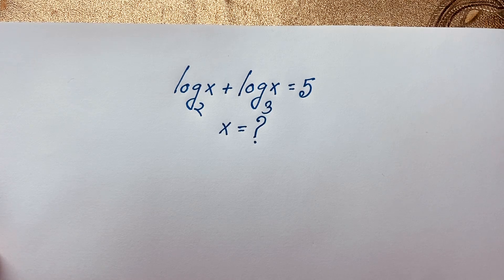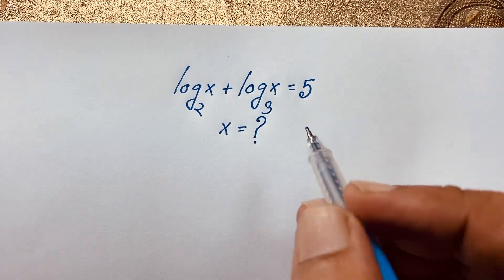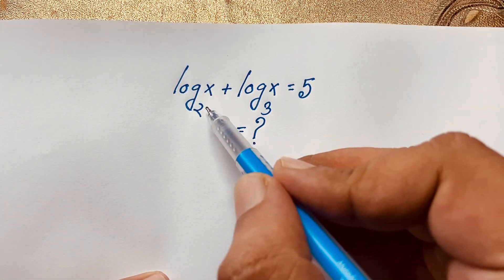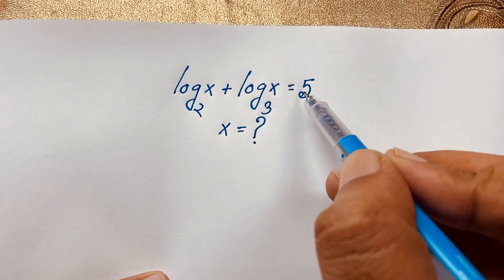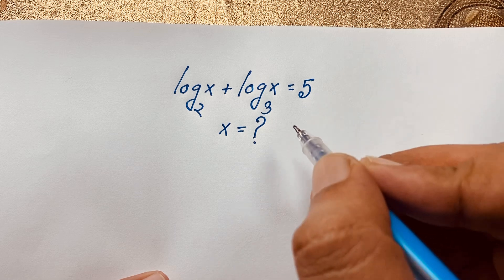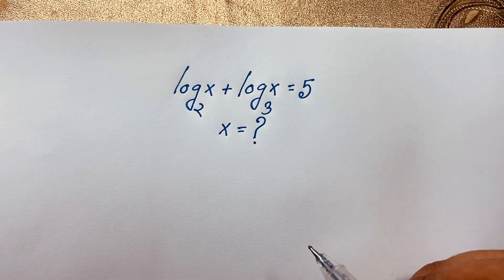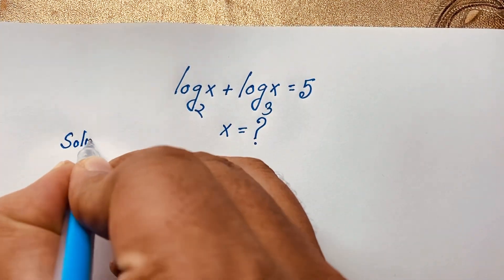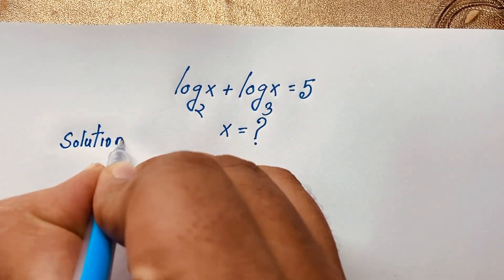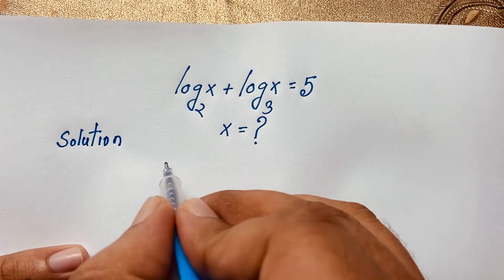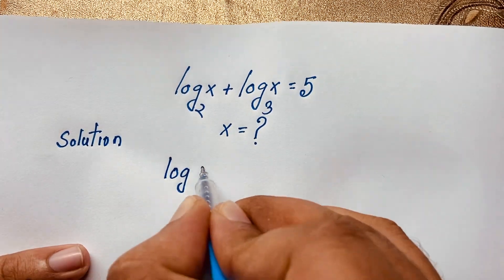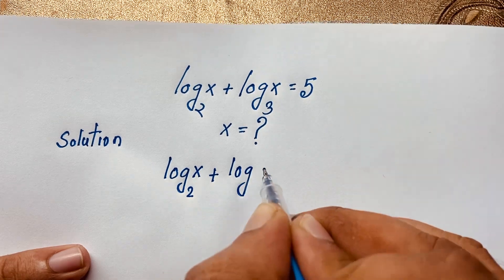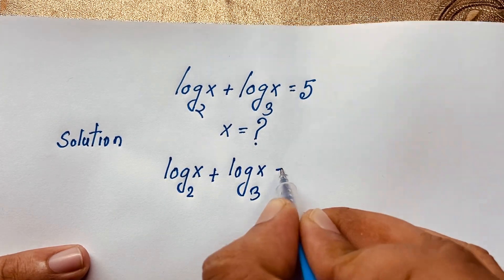Hello everyone. How to solve this interesting maths question, which is log x base 2 plus log x base 3 is equal to 5. We are finding out what is the value of x in this maths question. Our question is log x base 2 plus log x base 3 is equal to 5.